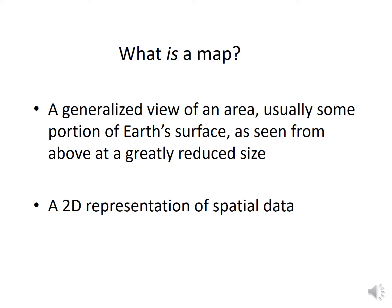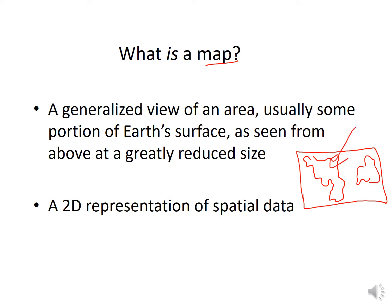What is a map? A map is a generalized view of an area, usually some portion of Earth's surface, as seen from a greatly reduced size. So a map is basically what we see of Earth but at a smaller size. If I flattened the Earth and drew on it, you might say it looks so small and doesn't look accurate — that's because it's greatly reduced.